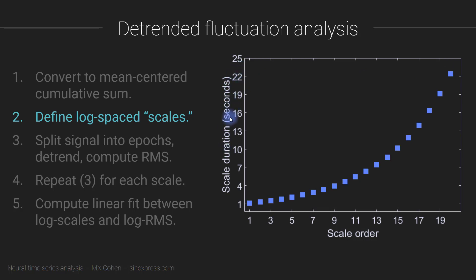This is not an analysis that you can apply to brief task-related epochs. You need a really, really long time series to do this analysis. It should be, you know, it's typically done during spontaneous activity, so resting state activity, where you might have, for example, 10 minutes of the research participant not really doing anything, just sitting in a chair relaxing.